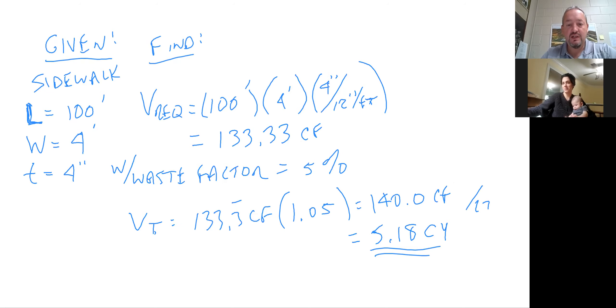If you called the batch plant and ordered 5.18 cubic yards, they'd probably laugh at you. So that five percent may end up meaning you order five and a quarter or five and a half yards to make sure you're covered. It's a volume calculation with a waste factor or overage depending on your type of construction, and we'll talk more about types of construction — we have a whole set of slides for that.